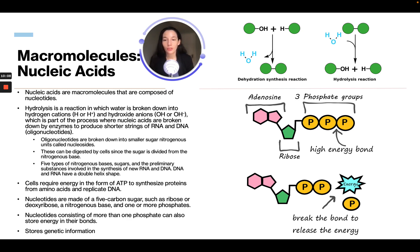These can be digested by cells since the sugar is divided from the nitrogenous base. There are five types of nitrogenous bases, sugars, and the preliminary substances involved in the synthesis of new RNA and DNA. DNA and RNA have a double helix shape.